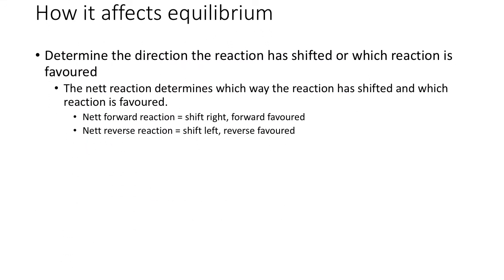Determine the direction that the reaction is shifted, or which reaction is favored. The net reaction determines which way the reaction is shifted. If there's a net forward reaction, it shifts to the right — it's forward favored. If it's a net reverse reaction, it shifts to the left — reverse favored. You have to work out which direction the endothermic and exothermic reactions are in order to work out whether the forward or reverse rate of reaction is favored.